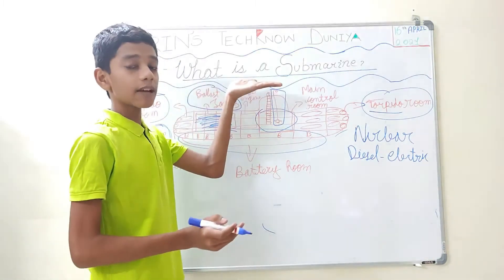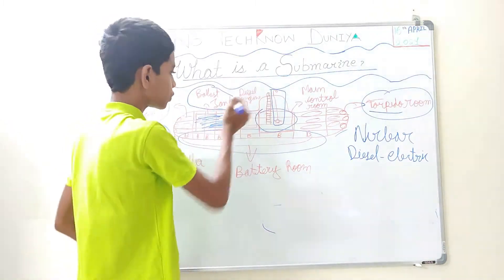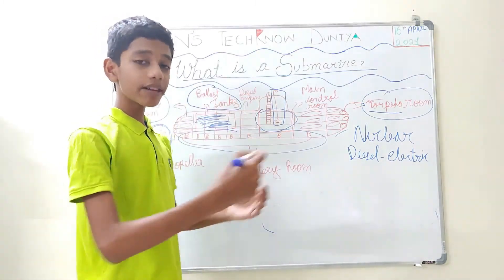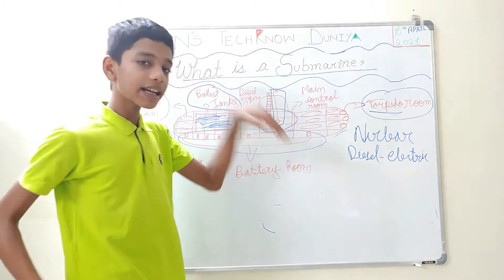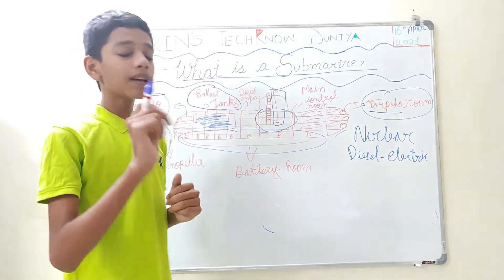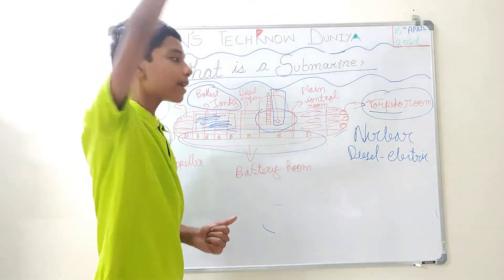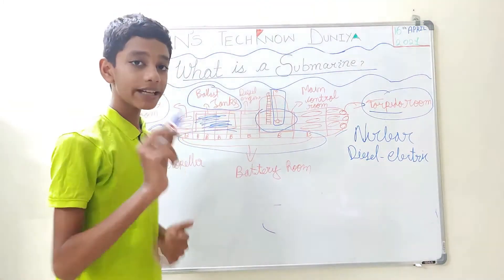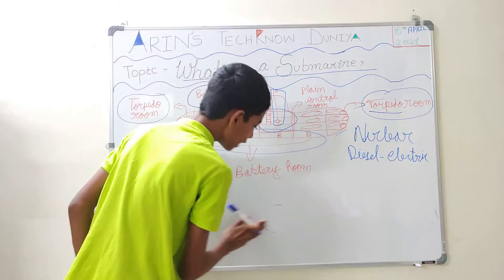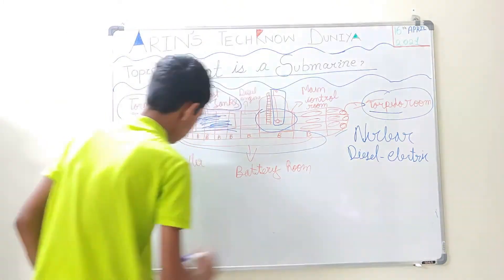It has to go to the surface. Then it will switch on the diesel engine. In 6 to 7 hours, it will charge the battery and then again go down. But there is one problem: if the enemy's satellite from Earth detects it, it is very hard for the submarine to survive.